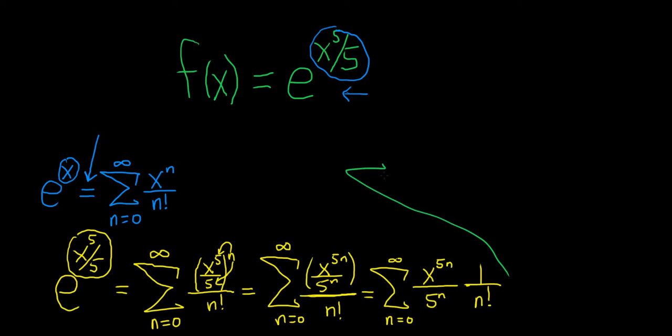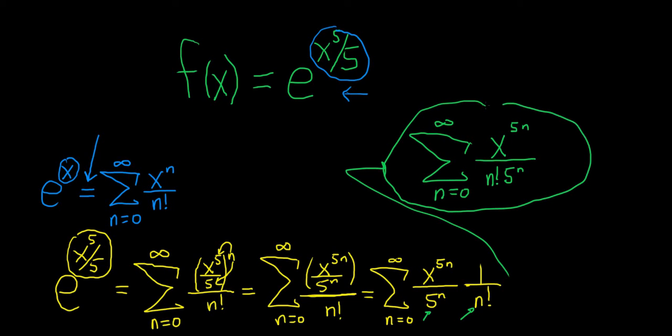Most people would write their final answer as follows. So this is the infinite sum as n runs from 0 to infinity. And so this will be x to the 5n over, and then what you can do is just multiply the n factorial and the 5 to the n. So this is n factorial times 5 to the n. And that would be the final answer. So this is the Maclaurin series for this function.